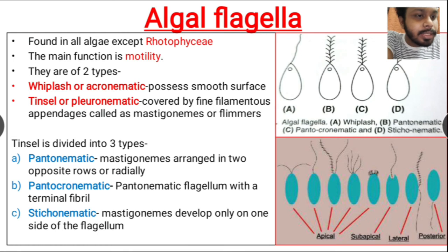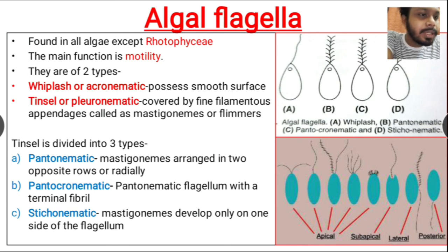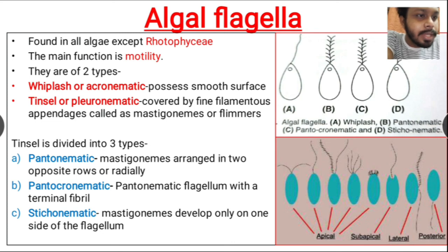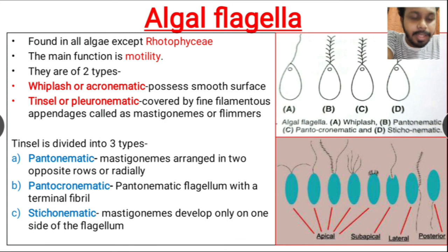Lateral flagella are those whose flagella are present on one side of the cell. If the flagella are present on the posterior or back side, it is called the posterior type of flagella. So depending on the position of the flagella and depending on the mastigonemes or filaments, we can divide algal flagella in different ways. Thank you for watching this video.